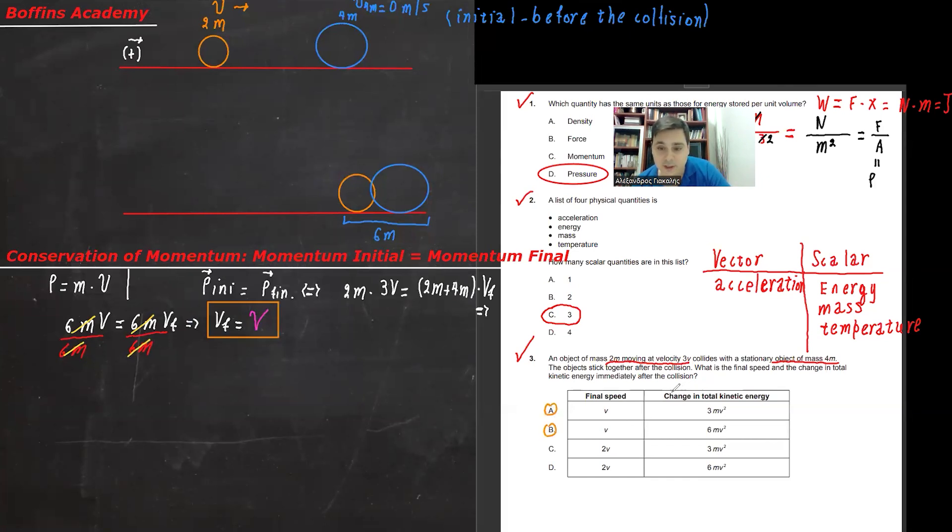And now it says change in total kinetic energy. So basically, this means that we are going to have to find a delta k. Delta k in Greek. Delta k. And we need to put an absolute value as well. Because in case we get a negative value, it's going to be positive. In any case, we want the absolute value.